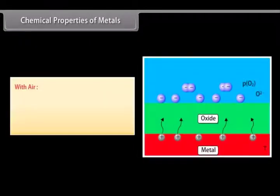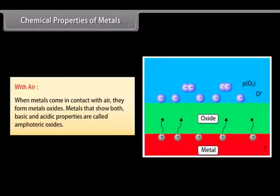With air. When metals come in contact with air, they form metal oxides. There are some metals that show both basic and acidic properties. Such metals are called amphoteric oxides.